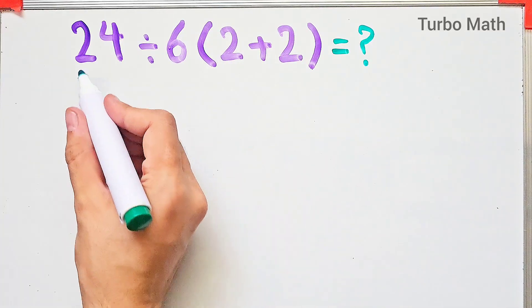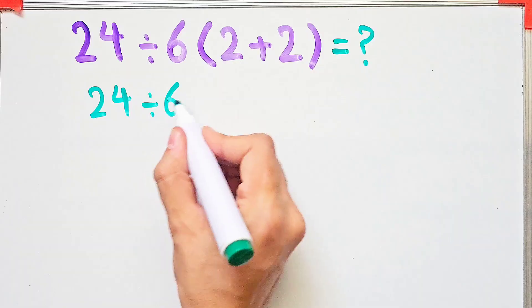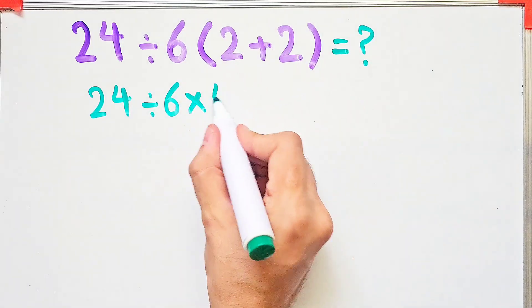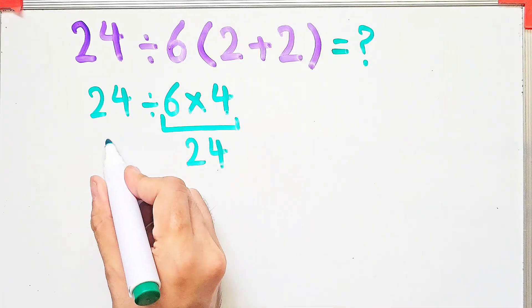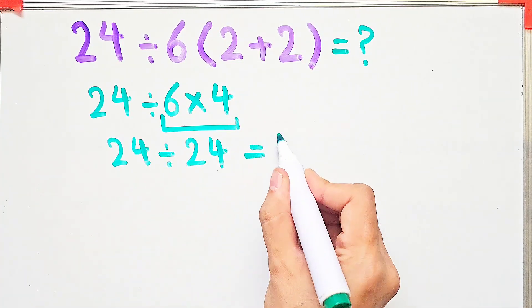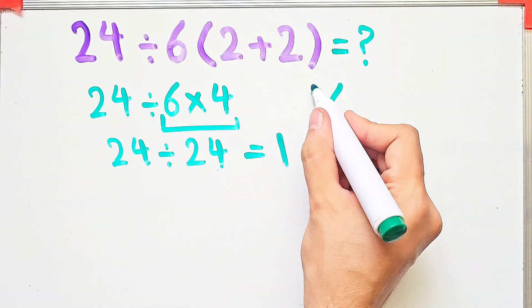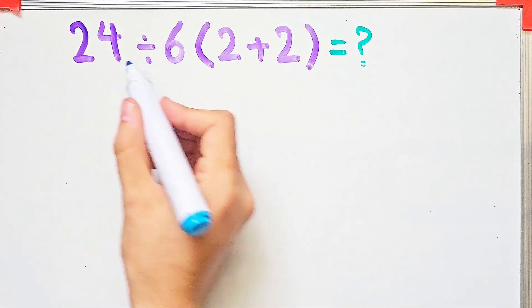In the wrong way of solving this question, some people first simplify the parentheses. And after that, they do this multiplication: 6 times 4 equals 24. And they say 24 divided by 24 equals 1. But this answer is definitely wrong.